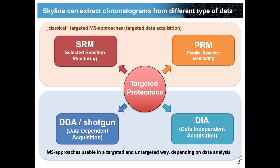But nowadays Skyline can deal with any of the other types of data as well. Skyline can also extract precursors and fragment ion chromatograms from PRM, precursors from DDA, and precursors and fragment ions from DIA data.